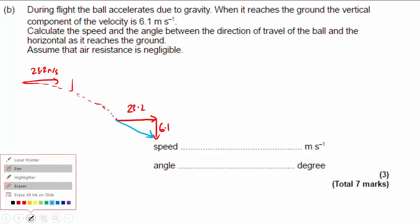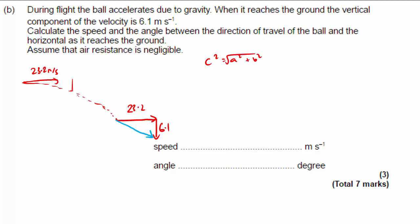Calculating this is just going to be a simple case of application of Pythagoras. C squared equals a squared plus b squared. Root both sides, so C equals square root of 23.2 squared plus 6.1 squared.